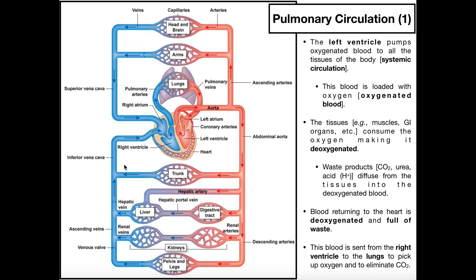If that deoxygenated blood simply went back to another organ, it would do no good — it no longer has oxygen. You have to have a way to get oxygen back into the blood. All of these veins converge back on the right side of the heart — the right atrium. Along with being deoxygenated, this blood contains waste products like carbon dioxide, urea, and acid from the tissues. So when this blood reaches the right side of the heart, we have to send it to the lungs to get more oxygen and also get rid of CO2 — and that all occurs in the pulmonary circulation at the level of the pulmonary capillaries.